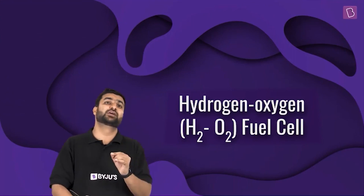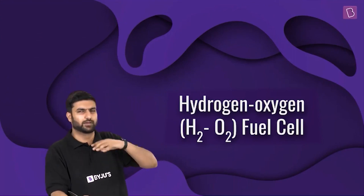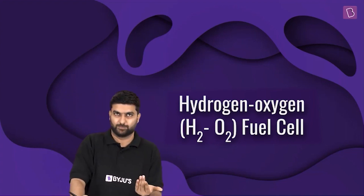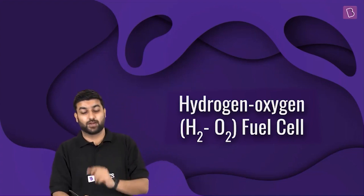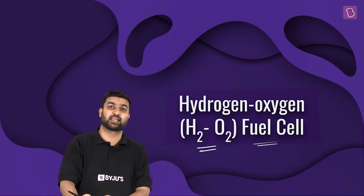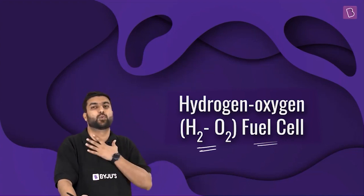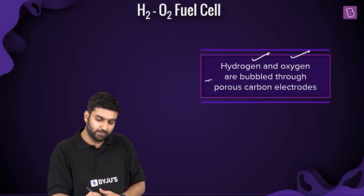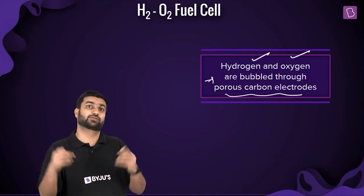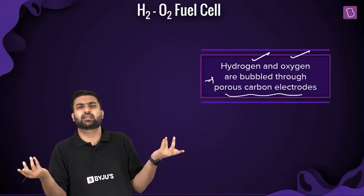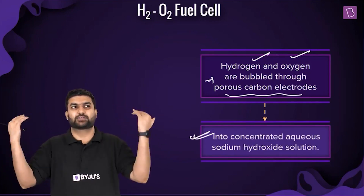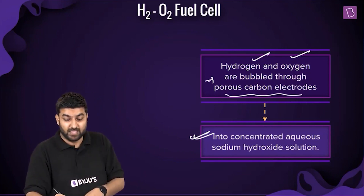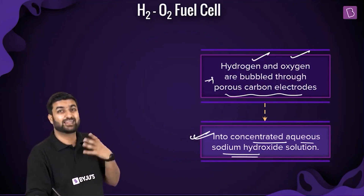In bachelor's and master's programs in this field, you'll come across around 12 to 15 popular types of fuel cells. The most popular one — and the only category in our curriculum — is the hydrogen-oxygen fuel cell. In this cell, hydrogen and oxygen are bubbled through porous carbon electrodes, with concentrated aqueous NaOH solution in between.